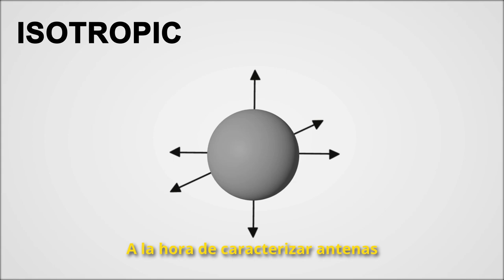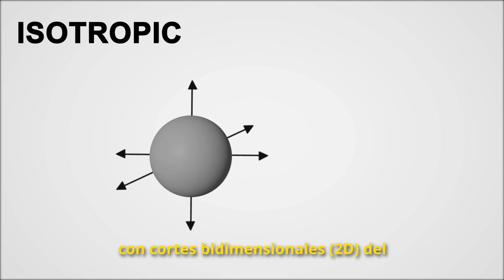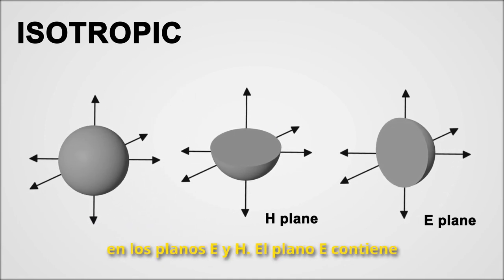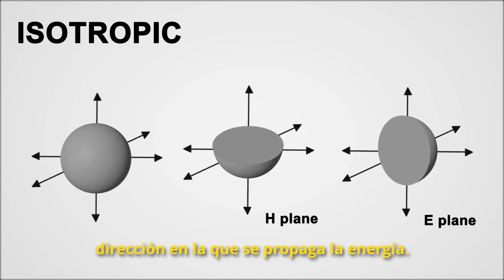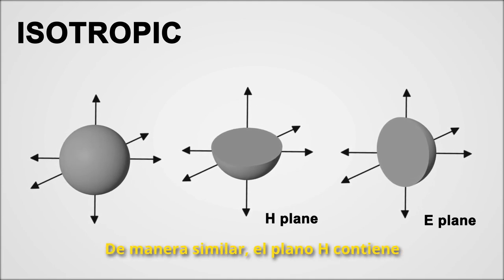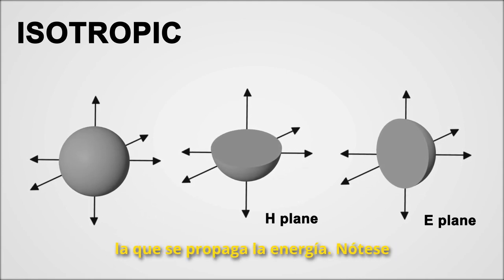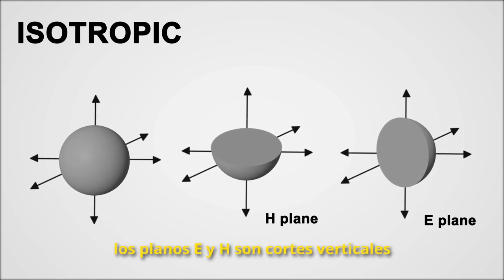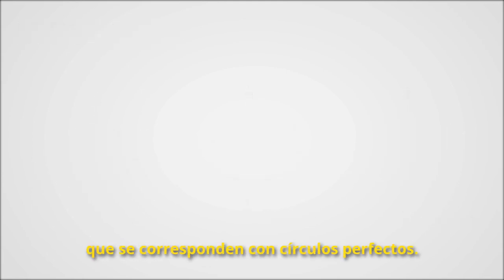When characterizing linear antennas, it is common practice to work with two-dimensional cuts of the original three-dimensional pattern. In particular, we normally pay attention to the E and H planes. The E plane contains the direction of the electric field and the direction of the propagating energy. Similarly, the H plane contains the direction of the magnetic field and the direction of the propagating energy. Note that in the case of isotropic antennas, the E and H planes are vertical and horizontal cuts of a sphere, so they are perfect circles.